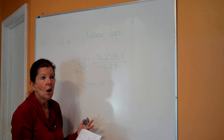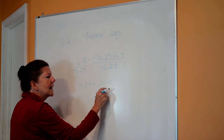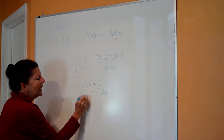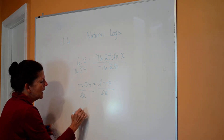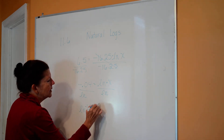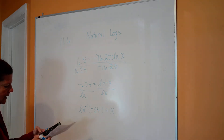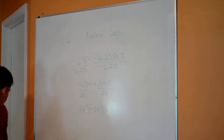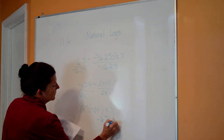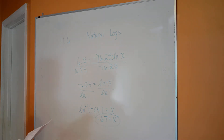Basically I'm asking: what number can I take the natural log of and get negative 0.04? I'm going to have to use the inverse natural log, because you can't divide by the natural log, but you can take its inverse — that's like dividing by it. On your calculator, that's second and then the natural log button, then negative 0.04, which gives me a value of 0.67.